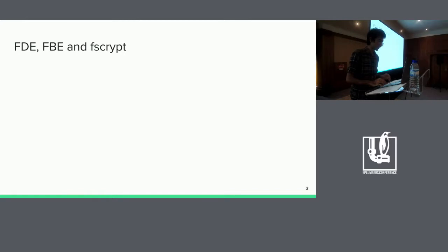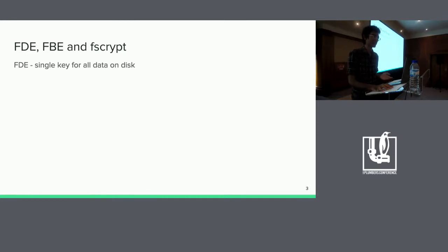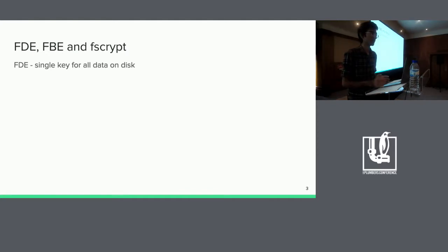All right, on to FDE, FBE, and FSCrypt — that's a lot of acronyms. On Android, we used to require support for full-disk encryption, FDE, where all data on the disk was encrypted with the same key. So users had to provide the key at boot time, and before this key was provided, the system couldn't do things like receive texts or ring alarms. So we wanted something more flexible — something that would let us boot into user space and ring alarms even before a user has provided their password. And to that end, we wanted to be able to encrypt different parts of the file system with different keys.